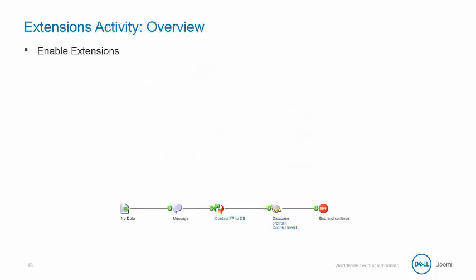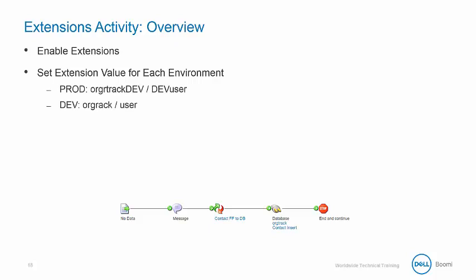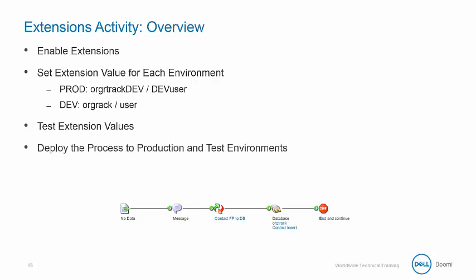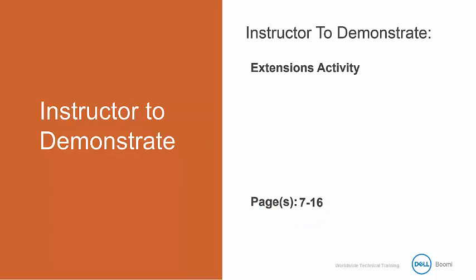We're going to enable extensions and set an extension value for each environment. The process connected to the development database, OrgTrackDev, will use DevUser for the owner field. And the process connecting to the production database, OrgTrack, will have the owner field set to User. We'll test the extension values and deploy the process to both our production and test environments, setting extension values for each environment. Let me demonstrate the activity first and then you can complete it. This is on pages 7 to 16 of the activity guide.